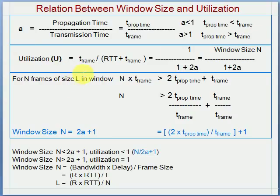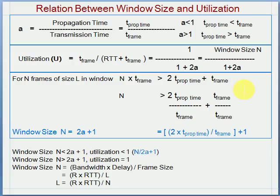From the utilization formula, we can get utilization equal to 1 if window size n equals 1 plus 2A. For n frames of size L in the window, it will take total time n multiplied by T-frame. To get good utilization, this value should be greater than 2A plus 1, which equals 2 propagation times plus T-frame time. To solve problems, remember the formula: window size n = 2A + 1.